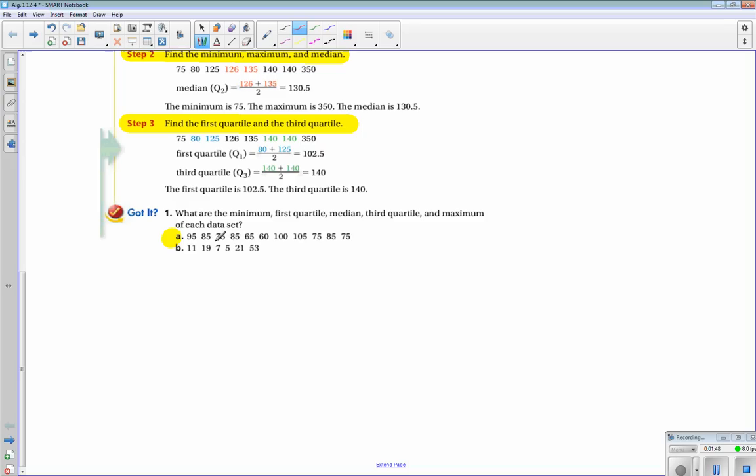So let's order these from least to greatest. The least right here is 60, then it goes 65, 75, then 75 three times, then 85 three times, then 95, 100, 105. There are 11 sets of data, so I am definitely going to have a mean. It's one, two, three, four, five - 85 is my median.